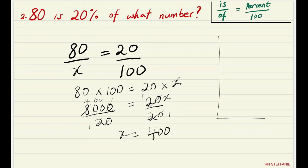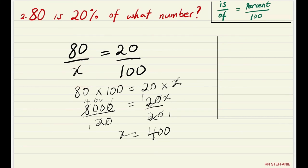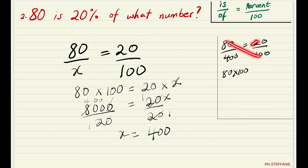Once again we want to see if our answer is correct, so we replace X with 400. We check: 80 over 400 is equal to 20 over 100. Cross multiplying: 80 times 100 is equal to 20 times 400. 80 times 100 is 8,000 and 20 times 400 is 8,000 — that means our answer of X being 400 is correct.